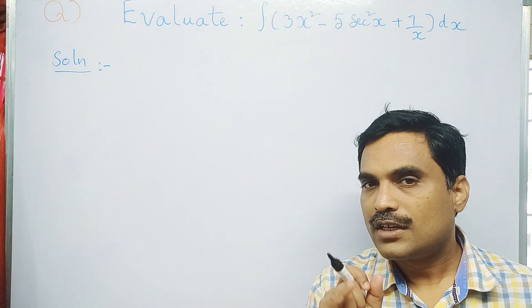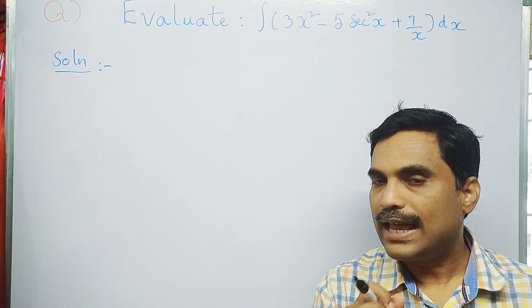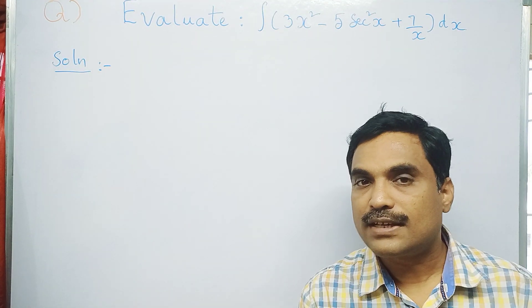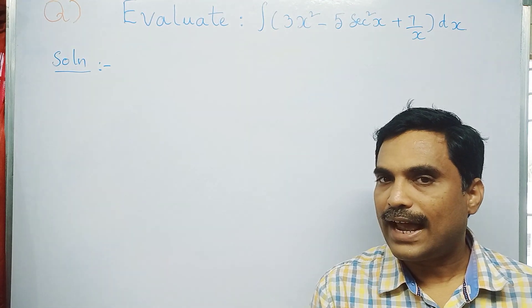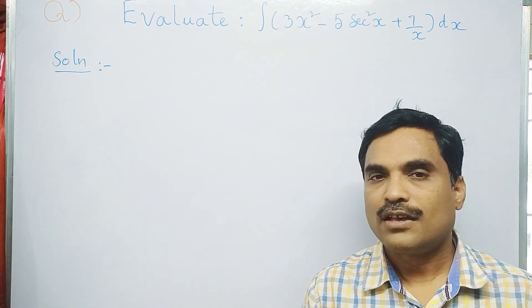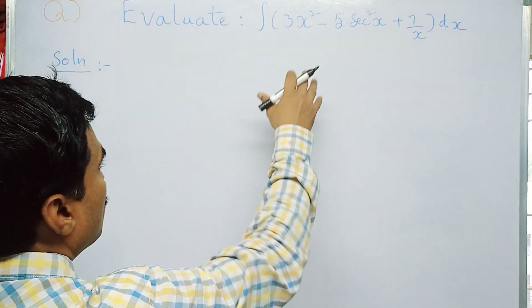First formula is: integral x power n dx is x power n plus 1 by n plus 1. Second formula is: integral sec²x dx is tan x. And third formula is: integral 1 by x dx is log x. So we'll get the final solution.